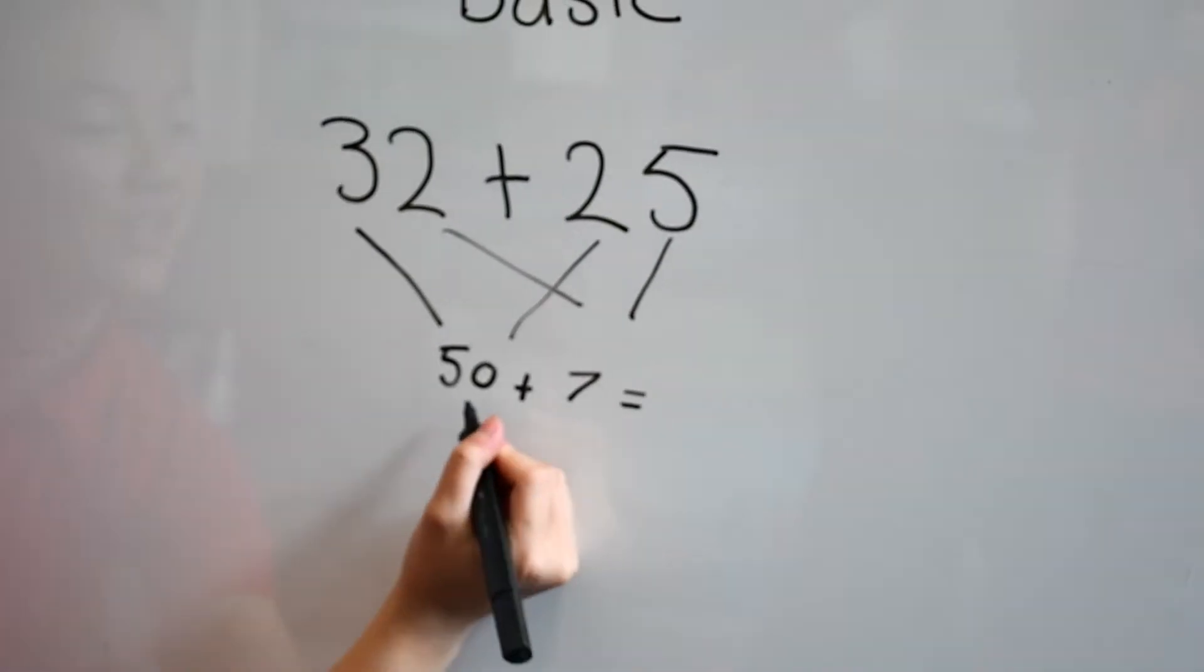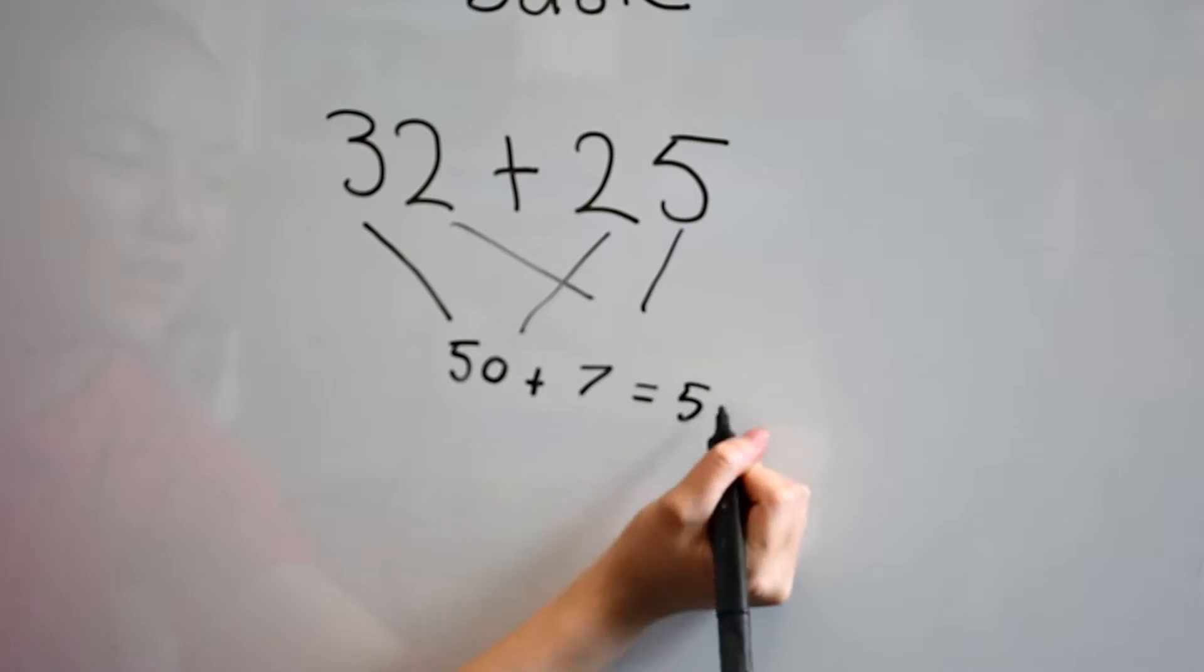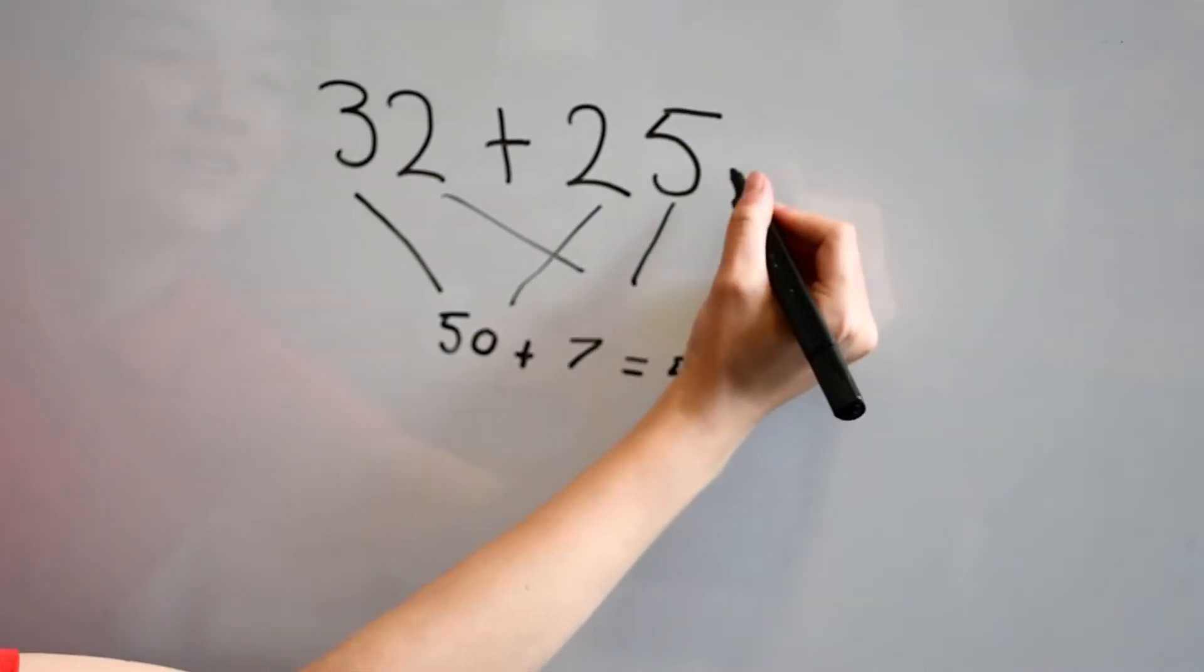So that equals, now we plus them together, which is 57. Therefore our answer is 57.